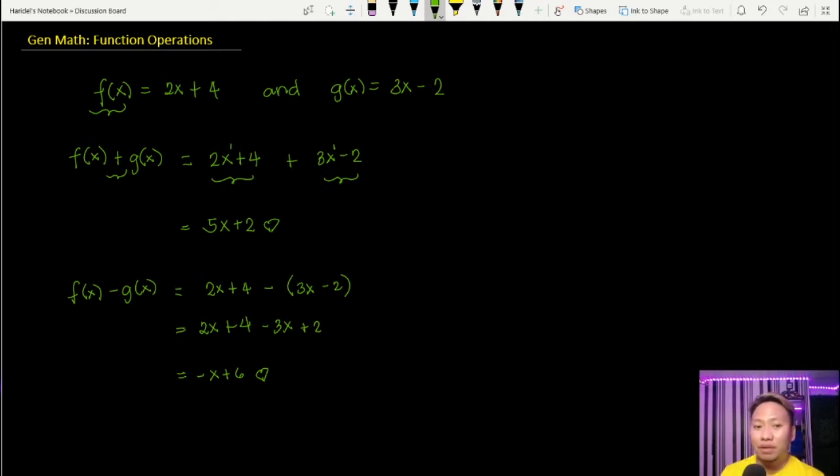Now let's take a look at multiplication. When we multiply functions, it's a shaded dot. You just have to multiply these two functions. If you notice, these two functions are binomial. When you say binomial, these are expressions with two terms. So we have first term, second term. Same thing with g(x), you only have two terms.